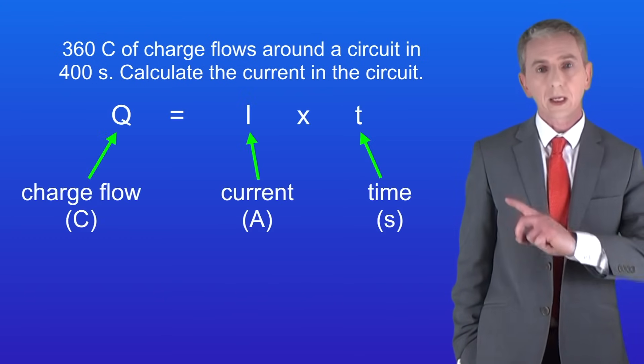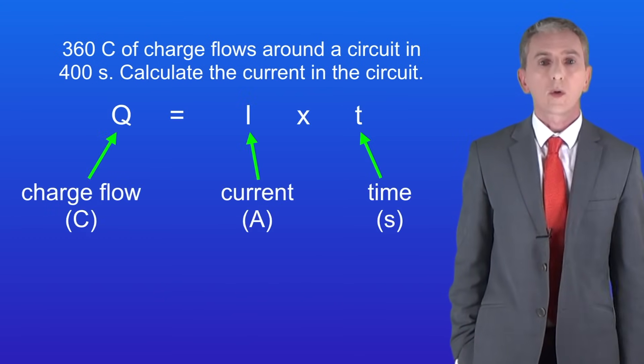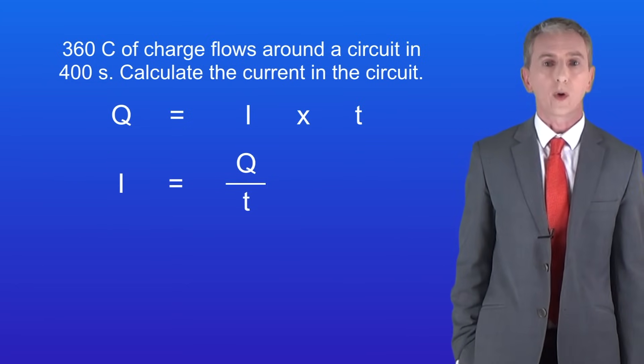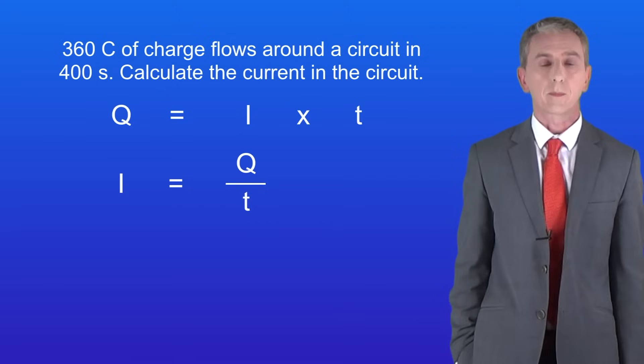Okay so here's the equation again. The charge flow equals the current multiplied by the time. We need to rearrange this to calculate the current. So here's the rearranged equation. The current equals the charge flow divided by the time.